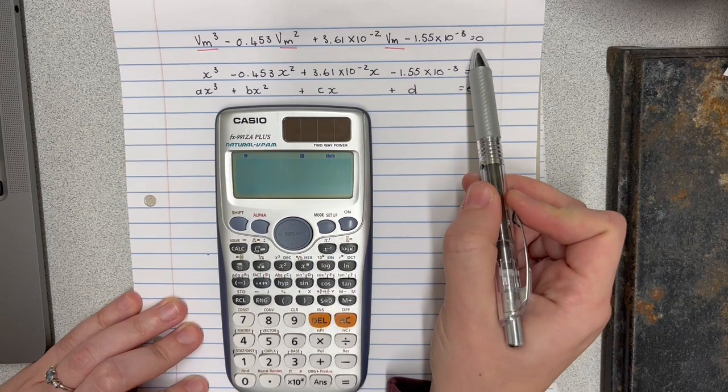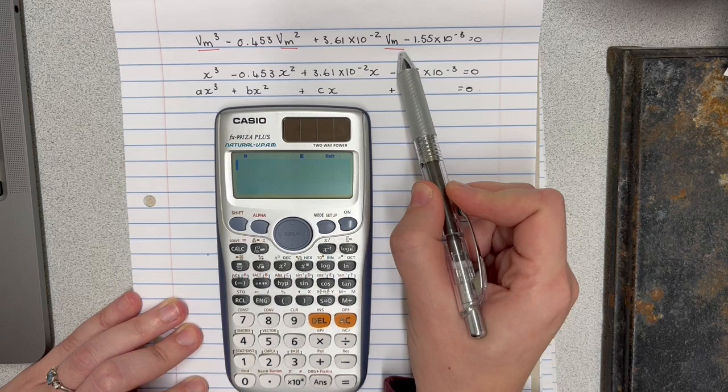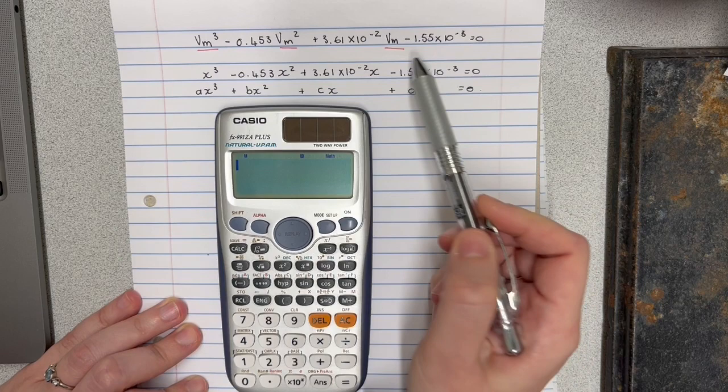So this is our example from lecture one in which we're trying to solve for the molar volume of a real gas using the equation of state that we've manipulated to create this cubic equation.